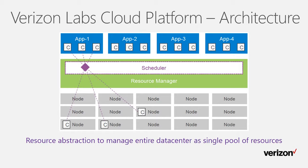As an application requires resources, it requests them based on a particular set of requirements. These requirements are checked against the current state of the data center, and resource offers are made accordingly. The resource manager, in concert with the application scheduler, then schedules individual application tasks on resources that best meet the requirement. This allows the most efficient placement of applications in the data center. Impacts to applications due to hardware failures are also mitigated through resource abstraction and automated application placement. Any hardware failure or performance degradation immediately triggers placement of the application on other available resources.